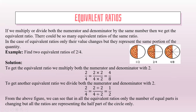Equivalent ratios. If we multiply or divide both the numerator and denominator by the same number, then we get the equivalent ratio. There could be so many equivalent ratios of the same ratio. In the case of equivalent ratios, only their value changes, but they represent the same portion of the quantity.